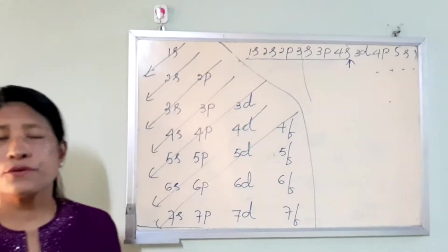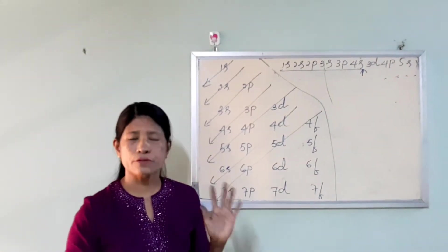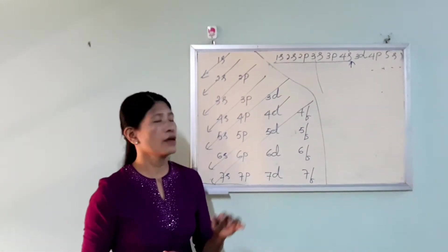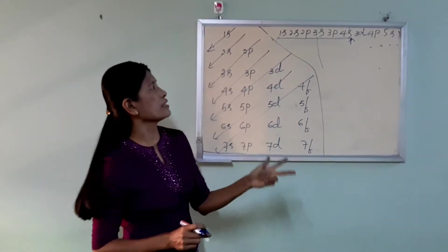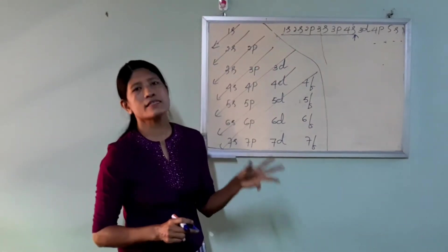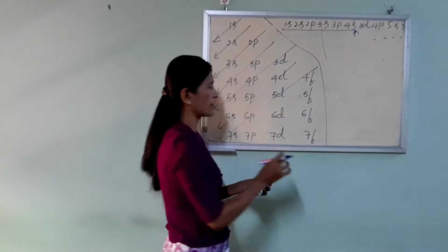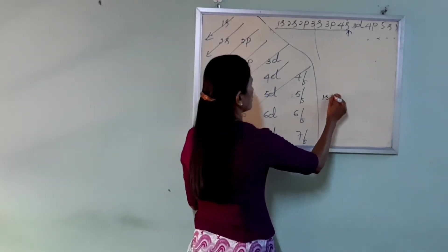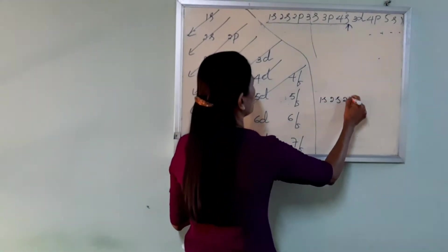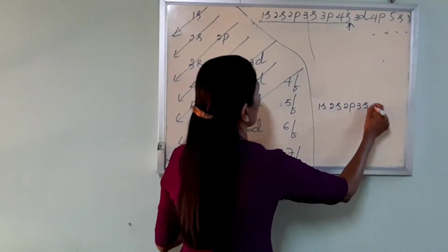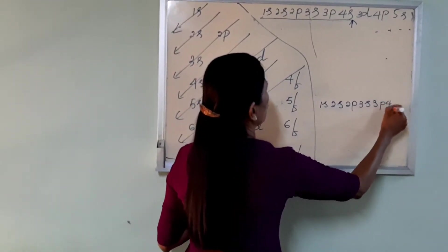Now we have to write the electronic configuration. The order is: 1S, 2S, 2P, 3S, 3P, 4S.